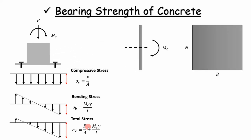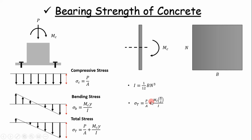Your base plate is N by B — that's the amount of contact it has with the concrete. We calculate the bending moment of inertia, then calculate the bending stress by substituting I and the load to get the total stress at the end. Then we calculate a margin of safety using a safety factor — I'll use three in this case. We need to make sure that margin of safety is greater than one. That's really just three steps: bending moment of inertia, total stress at the end, and margin of safety.